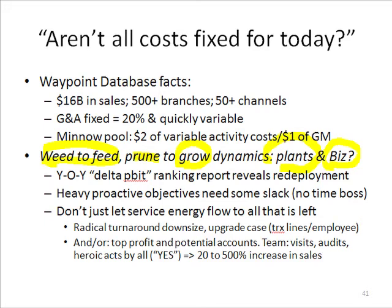So what we do is look at, for example, in the Waypoint universe, a report called the year-over-year delta PBIT — that's profit before interest and taxes, net profit if you will — a ranking report by customer. We look at the net profit we had on a customer two years ago and last year, subtract the two, and whether it's positive or negative, they all get ranked. At the top of the report, customers are up mightily — they grew 20%, 30%, 40%, 50%. Where do we get the people energy to take care of them?